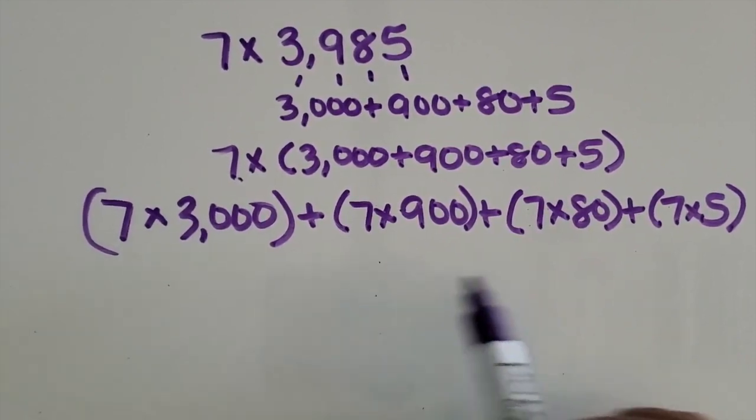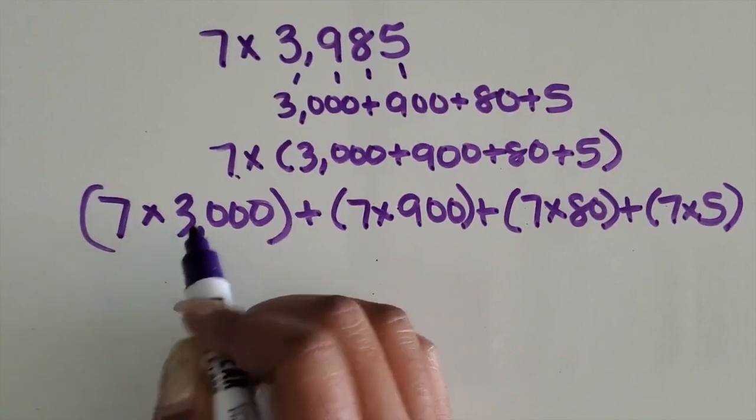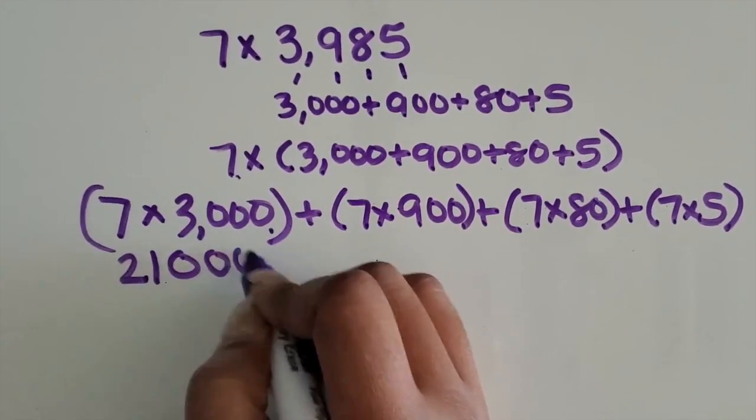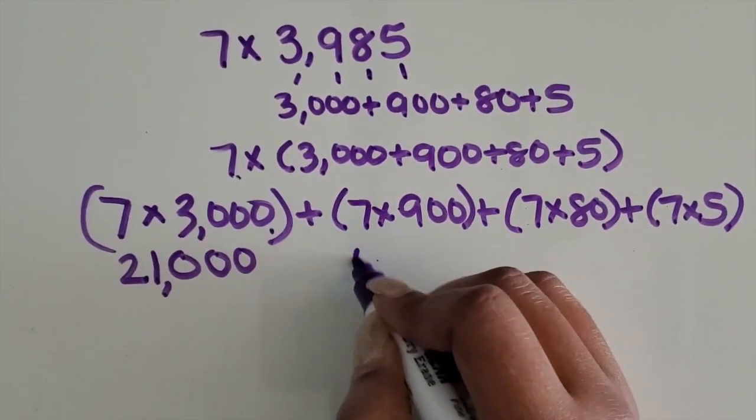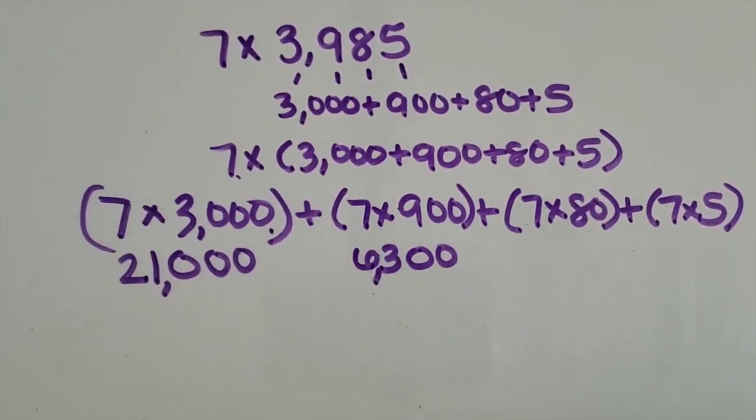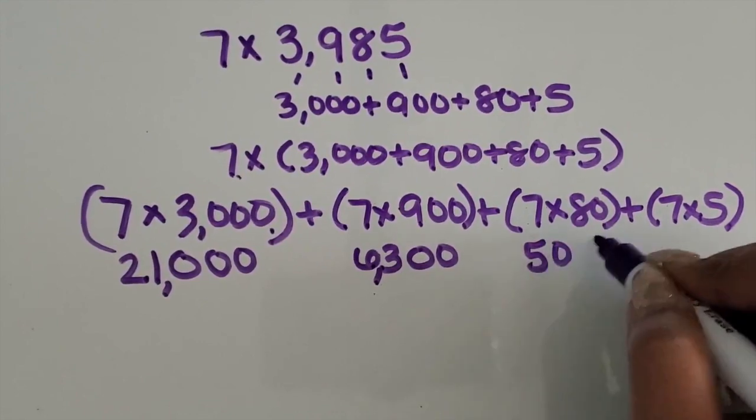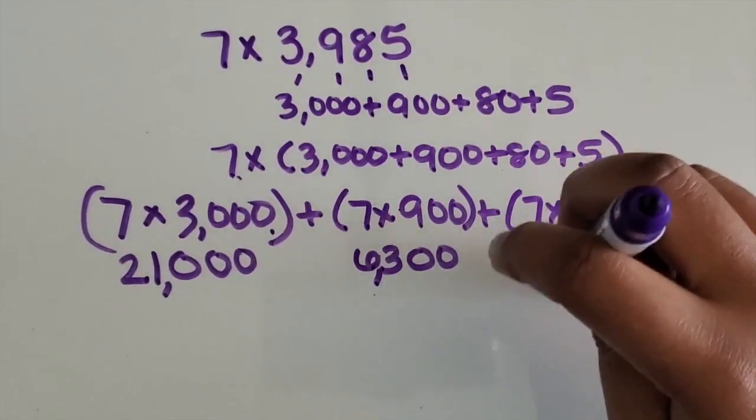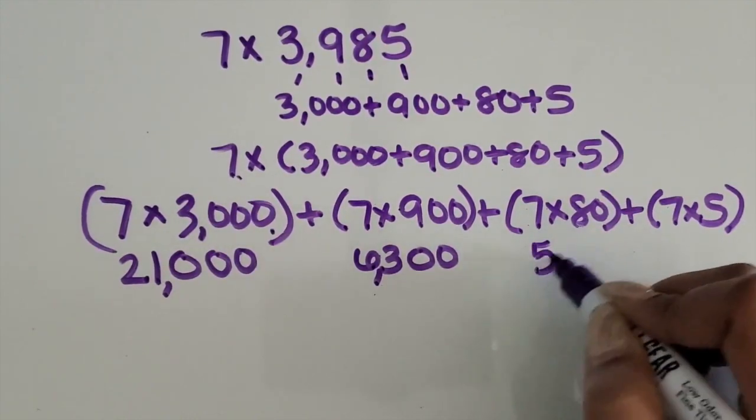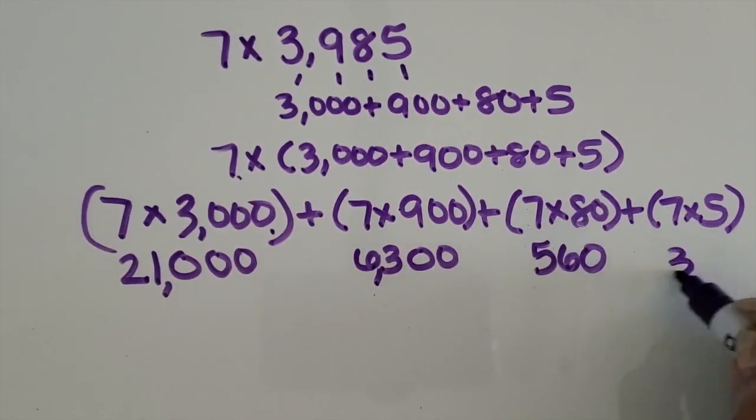We're going to write the values of each of the products for each expression below. Seven times 3 is 21. 1,000 times greater than that is 21,000. 7 times 9 is 63. 100 times greater than that is 6,300. 7 times 8 is 56. 10 times greater than that is 560. 7 times 5 is 35.